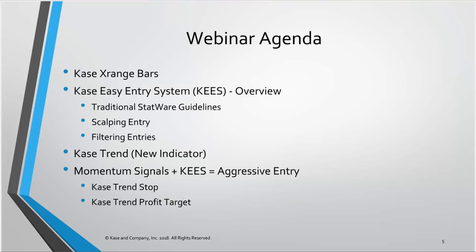In today's webinar, the first thing we'll go through is the Case X range bars — a fairly new bar type we've had on NinjaTrader for a few years, exclusively created for NinjaTrader 7 and 8. We'll also review the Case Easy Entry System, which we'll be using for a lot of the scalping-type signals. I'm not going to use this webinar to go through all of the StatWare indicators, but I do want to go over KEYS — the Case Easy Entry System — just so we have an idea of what we're looking for.